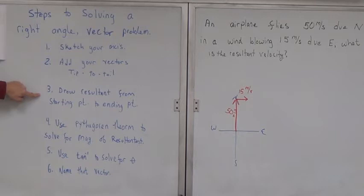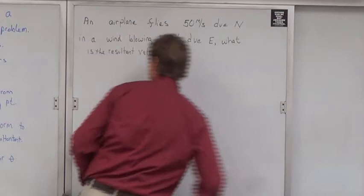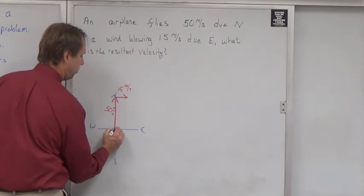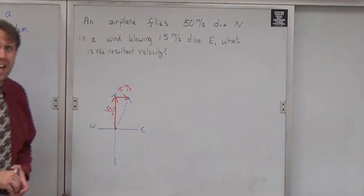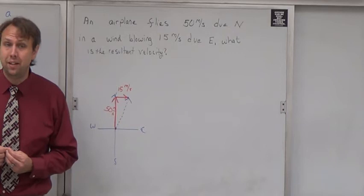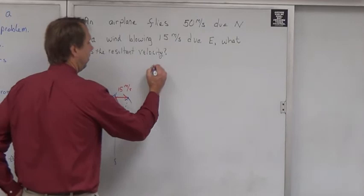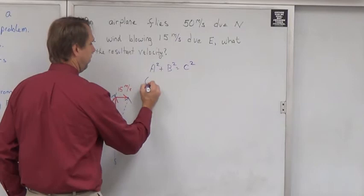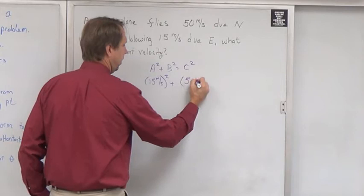Our resultant goes from where you started to where you ended up. So the resultant goes this way. You notice I dashed it. I did that because students who are working by pencil don't have different colors. So I'm going to recommend dashing your resultant so you always know which one your resultant is. Let's go ahead and figure out the magnitude of the resultant. We're going to use the Pythagorean theorem for that. I'm going to have 15 meters per second quantity squared plus 50 meters per second quantity squared equals c squared.